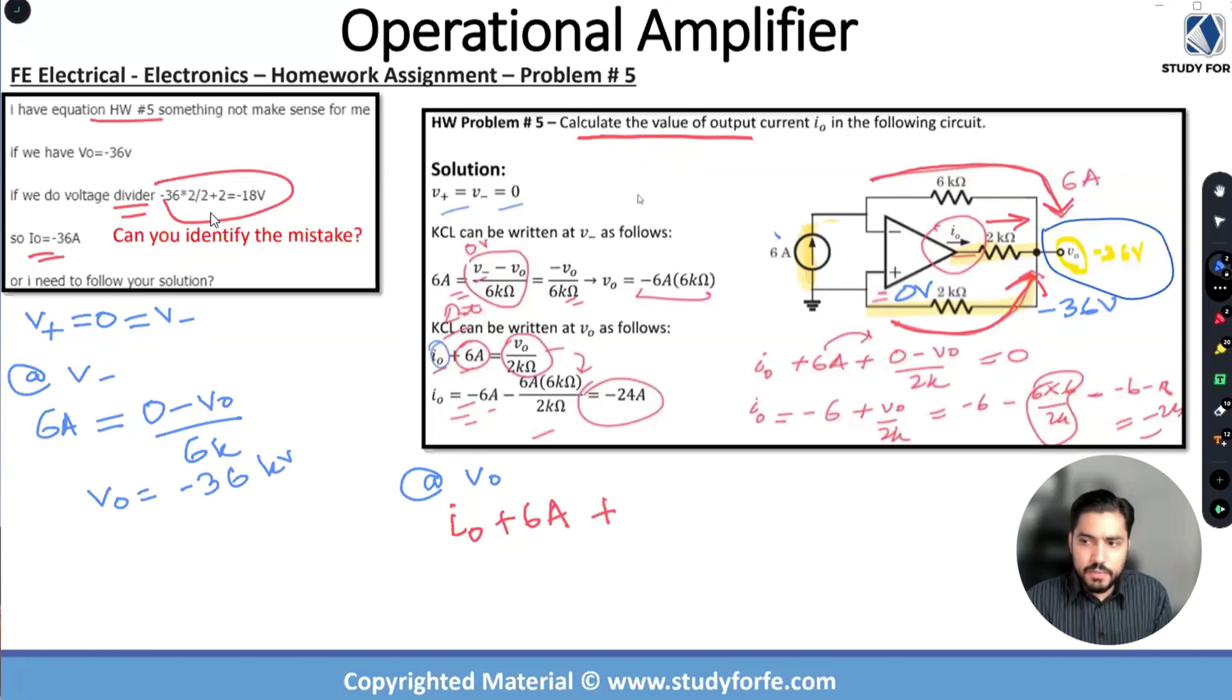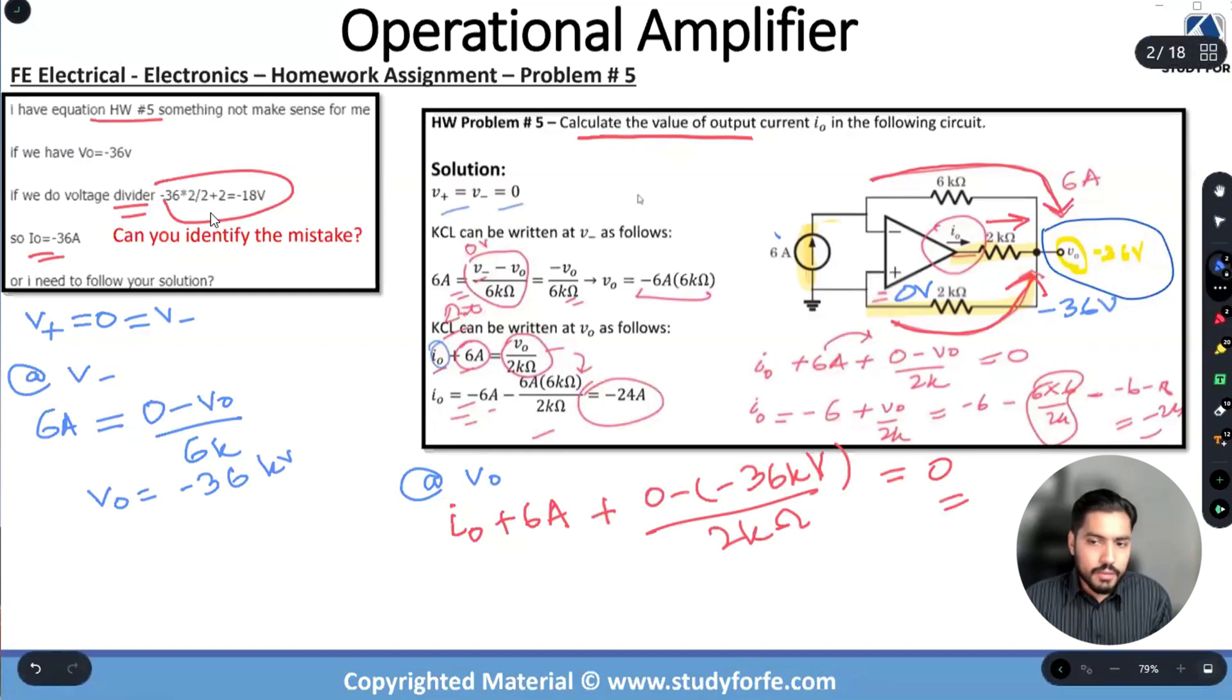Correct, so technically all three currents supposedly are entering, is that making sense? So if I write this equation it will basically become zero minus minus 36 k divided by 2k. This is volts over here and this is ohms over here and the sum all the currents are entering at a node and the sum has to be equal to zero. So the current that is leaving is equal to zero and I solve this equation and I will end up with minus 24 amps. Now this is a straightforward way of solving this problem.